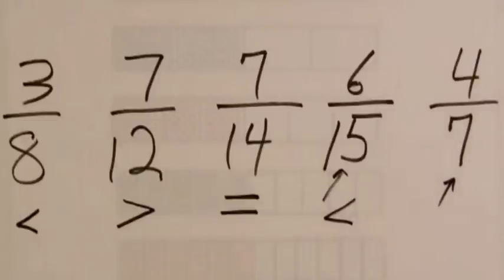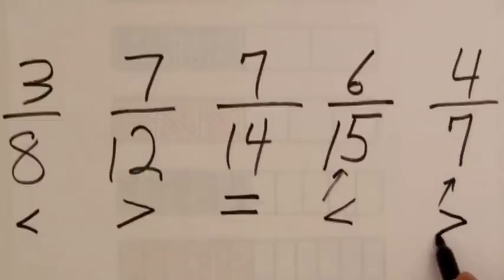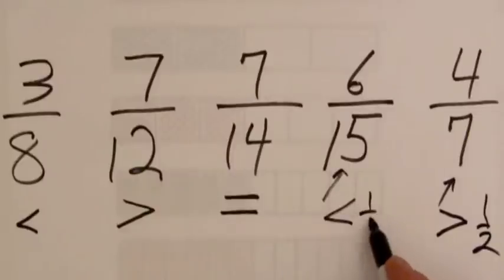Half of seven is three and a half. Four is greater than three and a half so this fraction is going to be greater than one half. Greater than a half, less than a half.